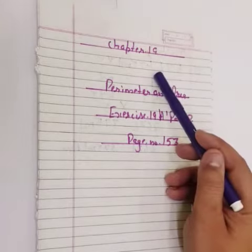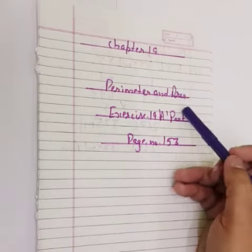Welcome to Rasa International School Online Classes. Today I will teach you Maths Chapter Number 19 of Class 4. Chapter name is Perimeter and Area.